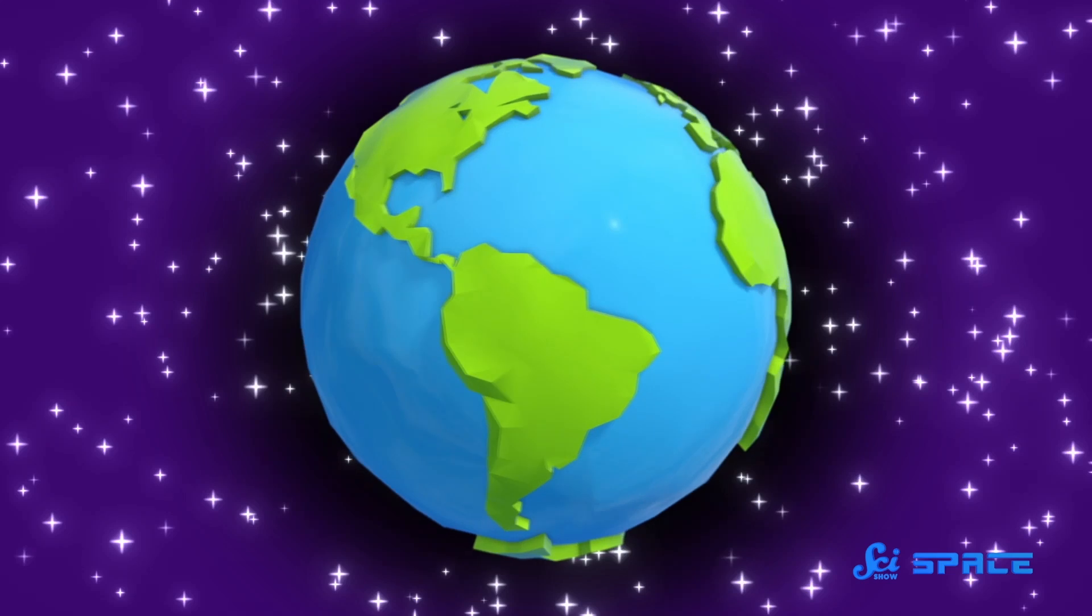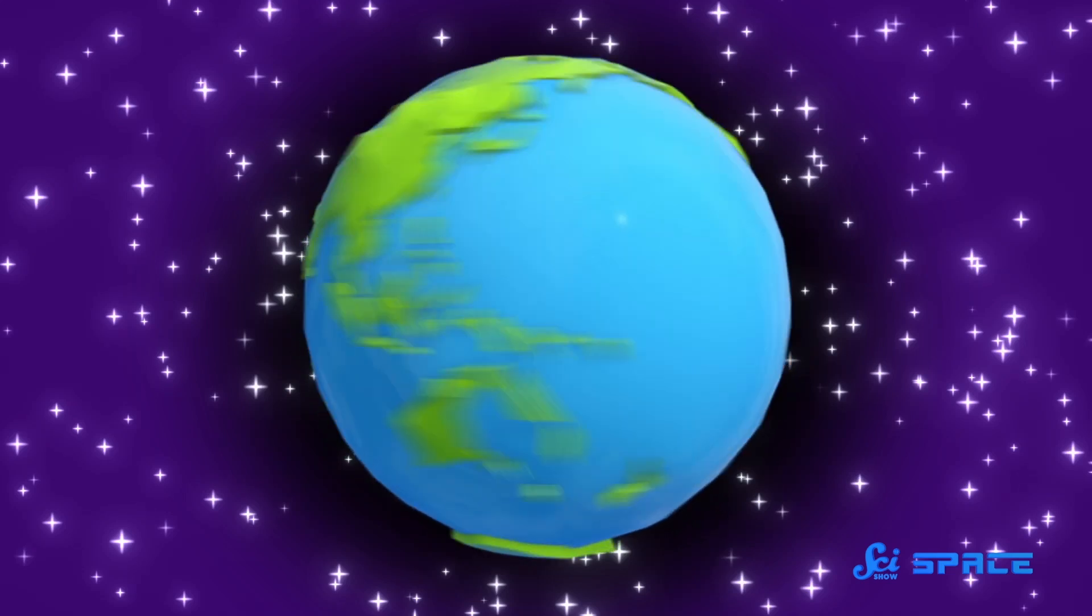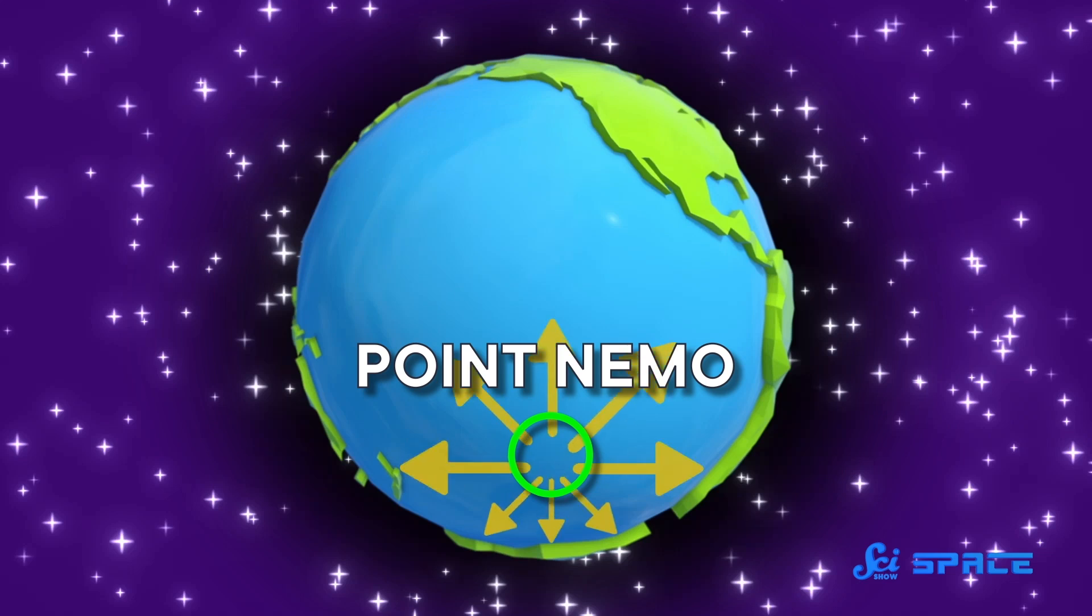So the space agencies want to make very sure that those parts come down somewhere they won't hurt anyone or cause any damage. The timing of the deorbiting burns will be carefully chosen to put the ISS on course for an uninhabited spot in the Pacific Ocean around July 2030. This space graveyard is sometimes called Point Nemo, and is at least 2,700 kilometers from the nearest landmass.